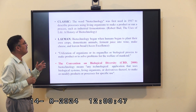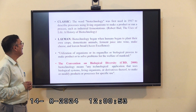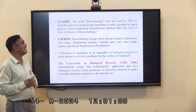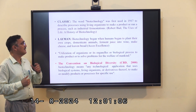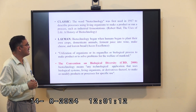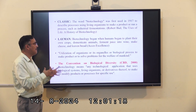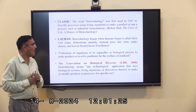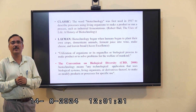In classical terminology, biotechnology was first introduced around 1970 to describe processes using living organisms to make a product or run a process such as industrial fermentation. In layman's language, biotechnology began when women were able to plant their own crops, domesticate animals, ferment juice into wine, make cheese and even bread. This marks the starting point of biotechnology — utilizing organisms or biological processes to make products or solve problems for the welfare of mankind.